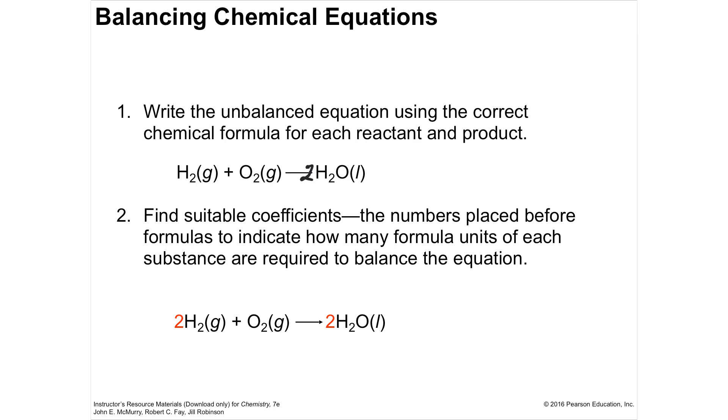So I need to multiply the right by two so that I can have two oxygens. Now when I look, I've got two oxygens on the right, two oxygens on the left, so that's okay, but I've messed up my hydrogens.